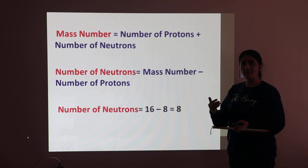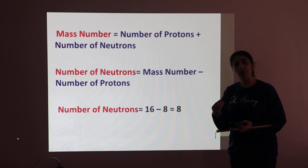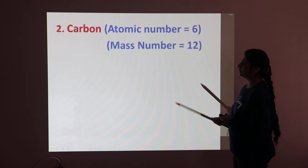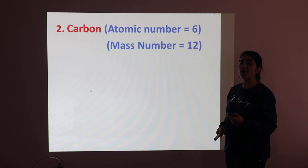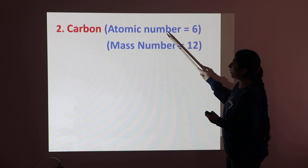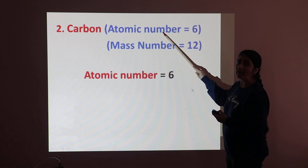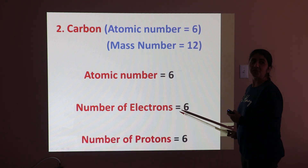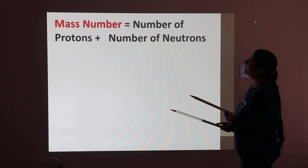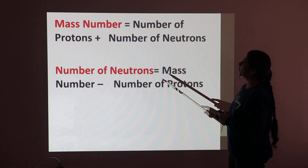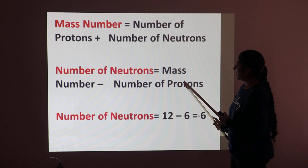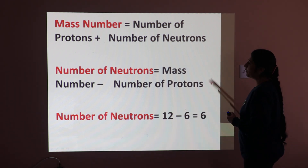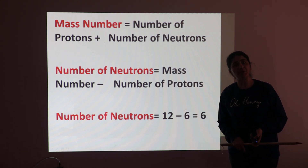From atomic number and mass number, we can easily calculate the number of electrons, protons, and neutrons. The next example is carbon, whose atomic number is 6 and mass number is 12. Since atomic number is 6, the number of electrons is 6 and the number of protons is 6. The number of neutrons is calculated from the mass number: neutrons equals 12 minus 6, which equals 6. So from mass number and atomic number, we calculate all three particle counts.